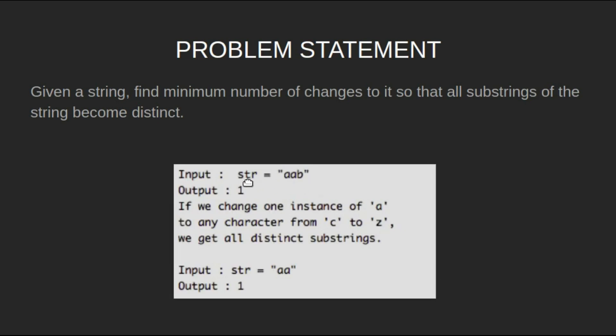For example, for input string aab, output will be 1. If we change one instance of 'a' to any character from c to z, we get all the distinct substrings.